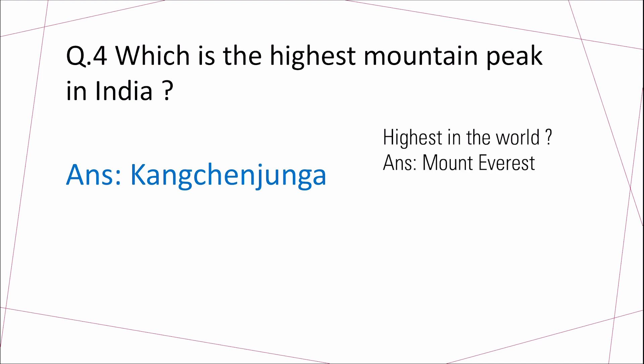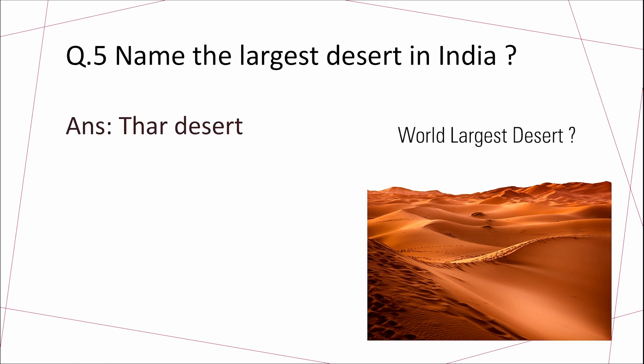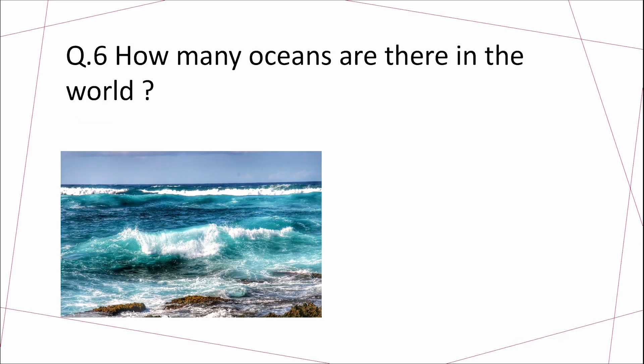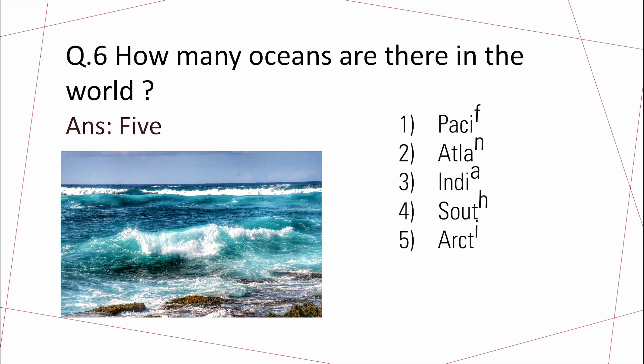Question 4: Which is the highest mountain peak in India? Answer: Kanchenjunga. Which is the highest in the world? Answer: Mount Everest. Question 5: Name the largest desert in India. Answer: Thar desert. Which is the largest desert in the world? Answer: Sahara desert.